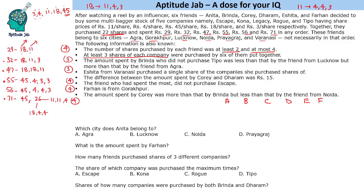We have six people: A, B, C, D, E, F. Brinda did not purchase Typo (the 3-rupee share). Brinda spent less than the friend from Lucknow but more than the person from Agra. Since Brinda has to be less than someone and more than someone else, she cannot be the least or the highest. So Brinda corresponds to the total of 47.